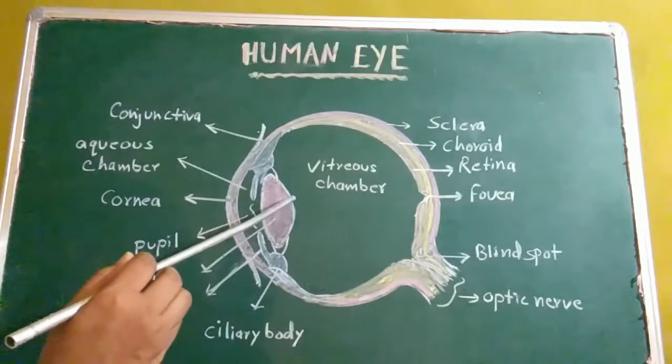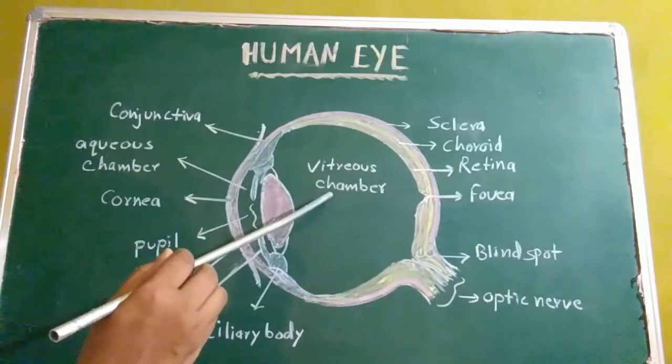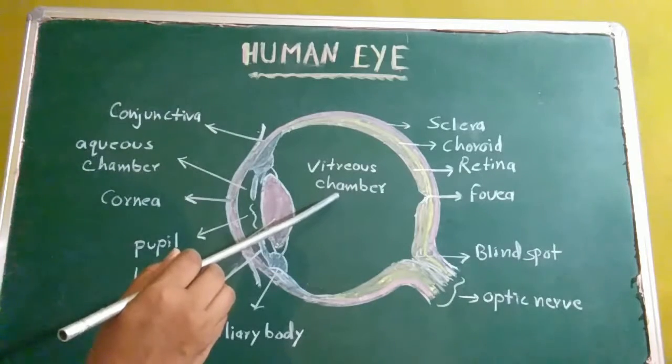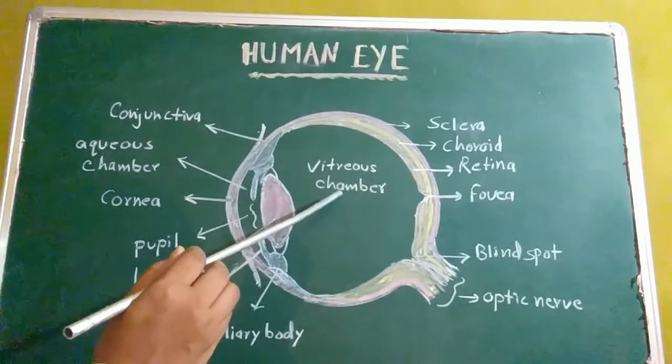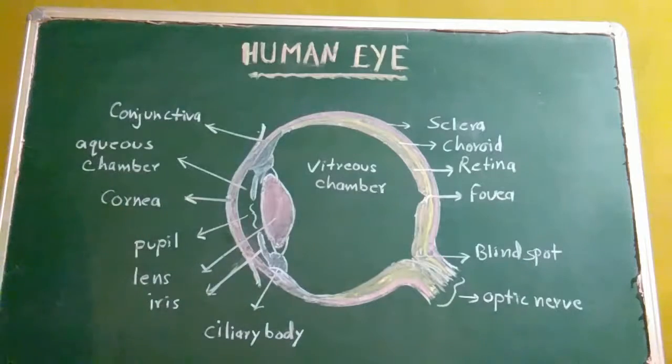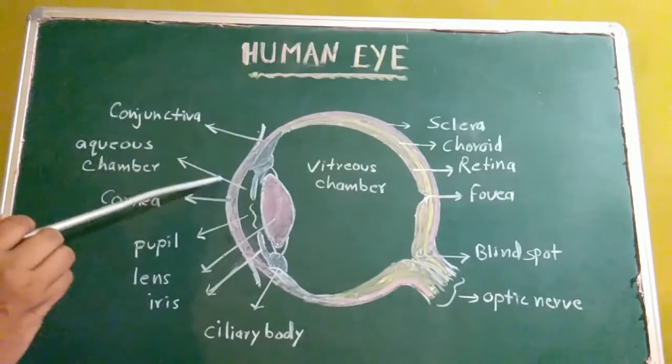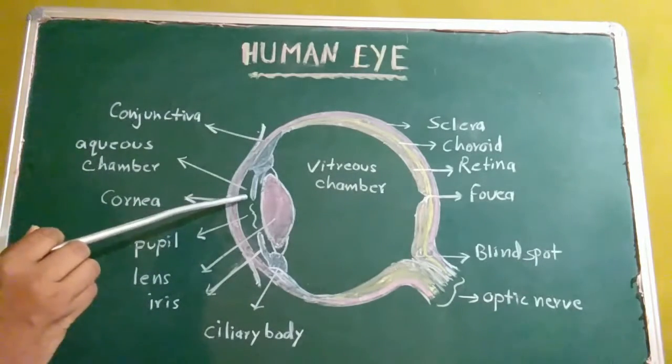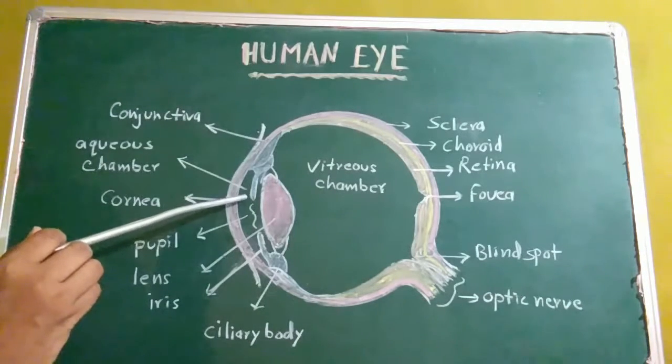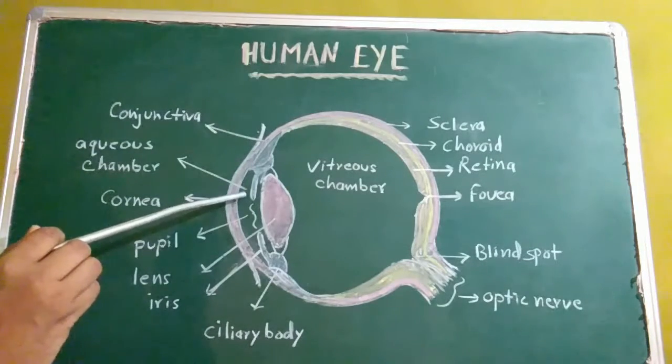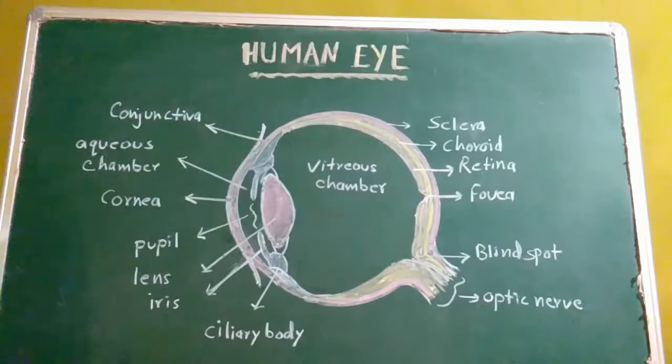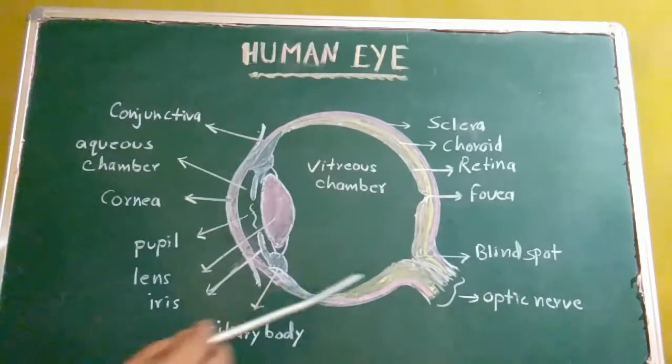There is a space behind the lens called the vitreous chamber, which is filled with fluid called vitreous humor. Similarly, there is a space behind the cornea called the aqueous chamber, filled with fluid known as aqueous humor. This is the structure of human eye.